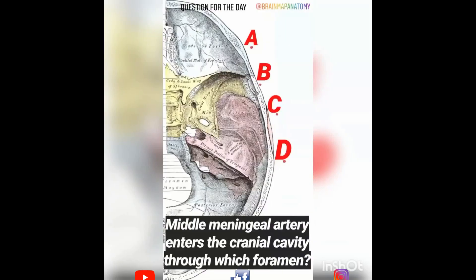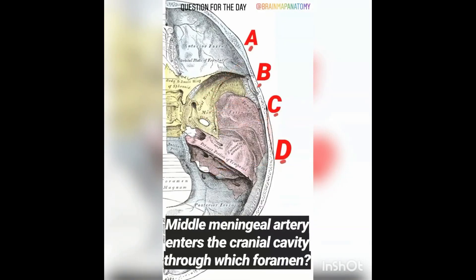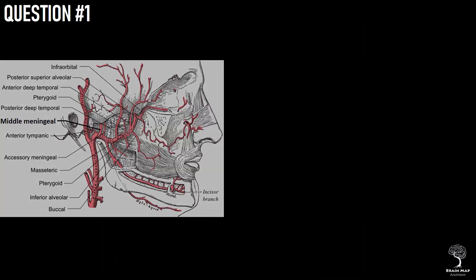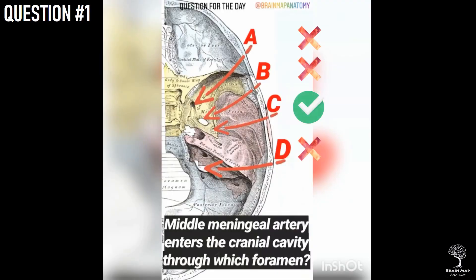Question 1. Middle meningeal artery enters the cranial cavity through which foramen? The right answer is option C, which is foramen spinosum. Middle meningeal artery is a branch of the first portion of the maxillary artery. It is given off at the infratemporal fossa and enters the cranial cavity through the foramen spinosum, supplying the dura mater and the skull vault.